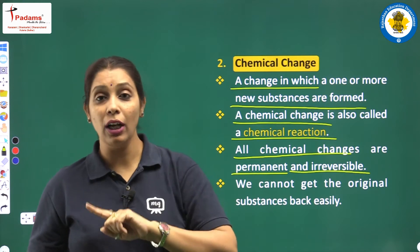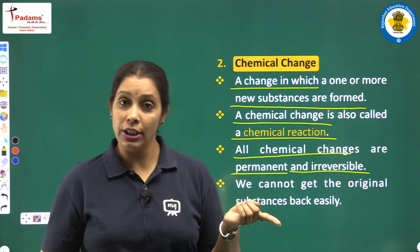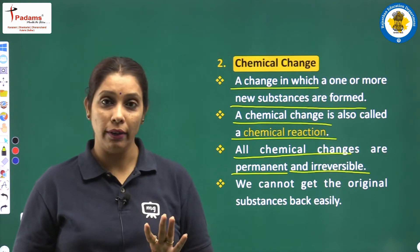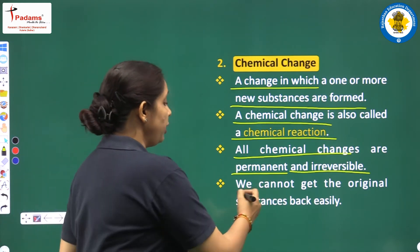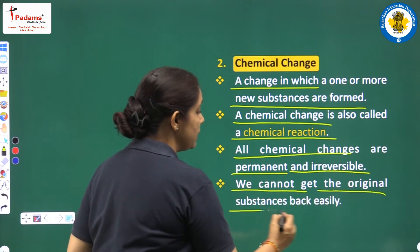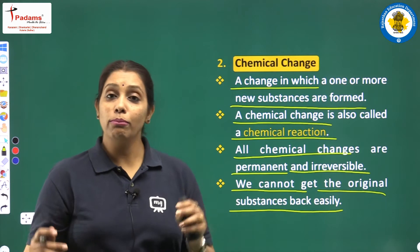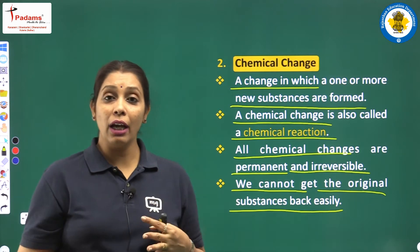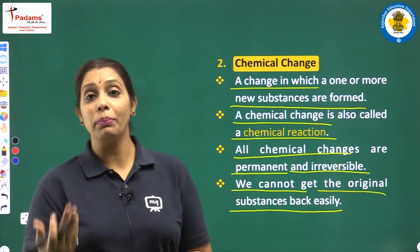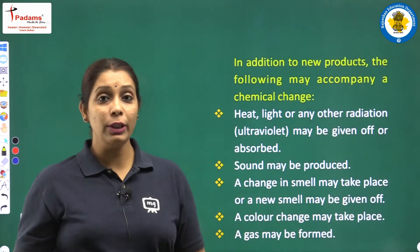Means, joh ek baar ban gaya, woh vaapas jis se bana hai, usme convert nahi hooga. We cannot get the original substance back easily. Jis se bana product hai, hum ko vaapas se nahi paa sakte hain. Let's proceed.